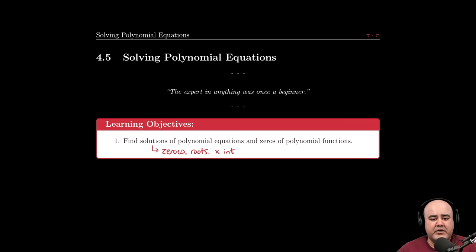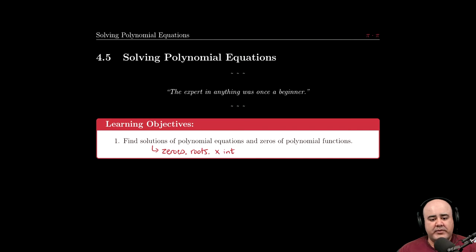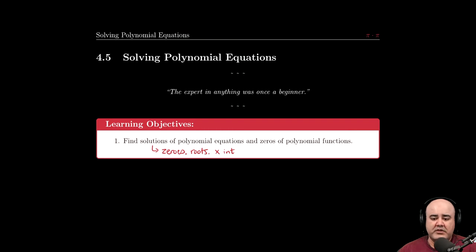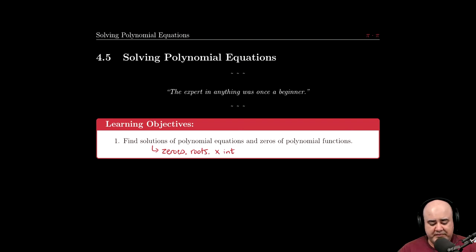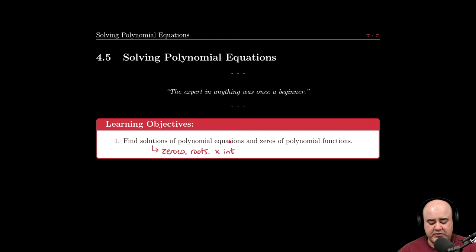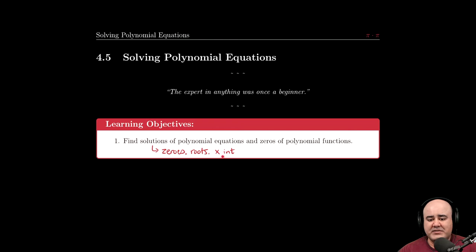In this section we'll talk about how to solve polynomial equations. The learning objectives are to find solutions of polynomial equations and zeros of polynomial functions. Vocabulary-wise, some of these things are interchangeable, so anytime you're asked to find solutions to equations that are polynomial in nature, you can also be asked to find zeros of the functions, the roots of the functions, or the x-intercepts of the function.